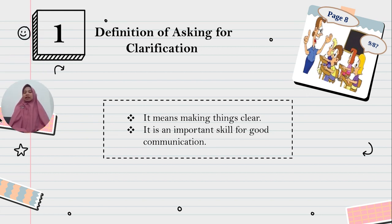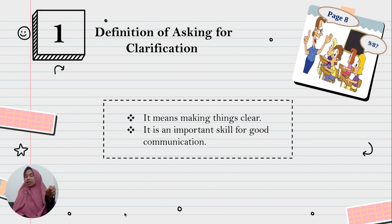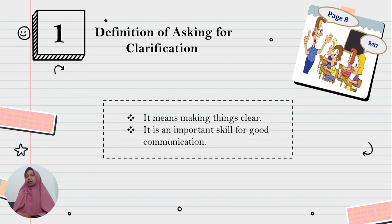Now let's see the next slide. What is asking for clarification? From the slide, asking for clarification means making things clear. For example, when someone gives you an instruction and you did the wrong instruction, you ask for clarification — so you make things clear.